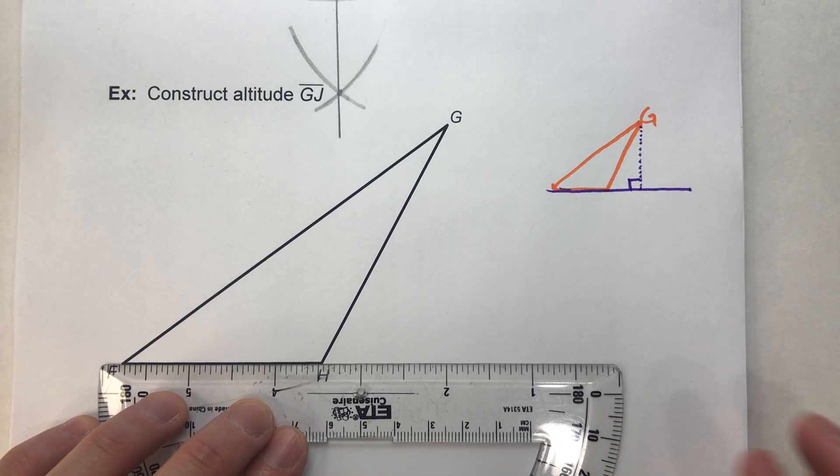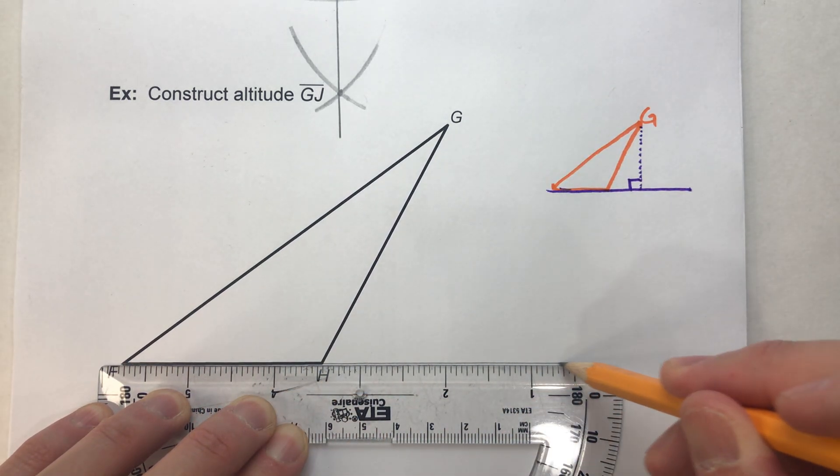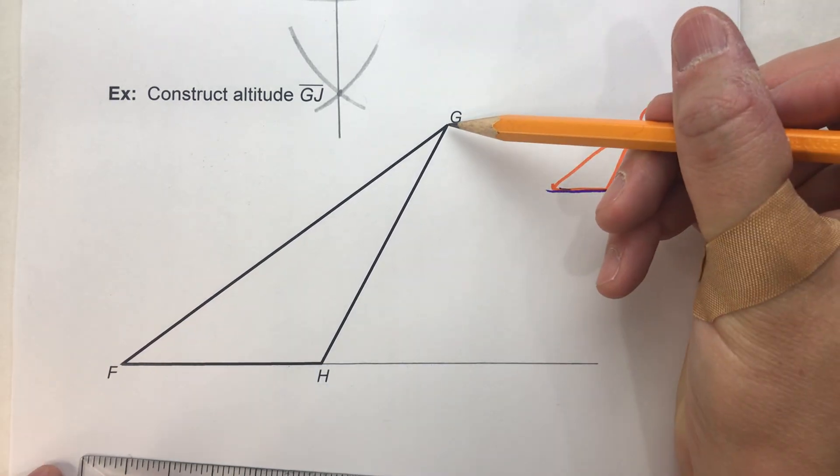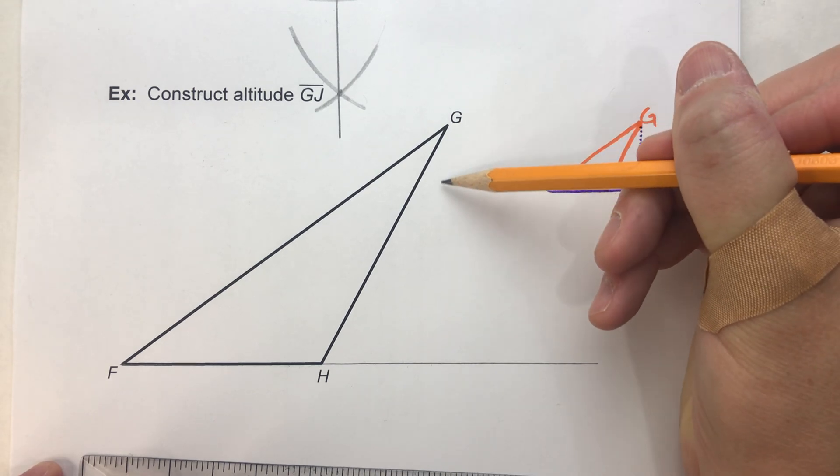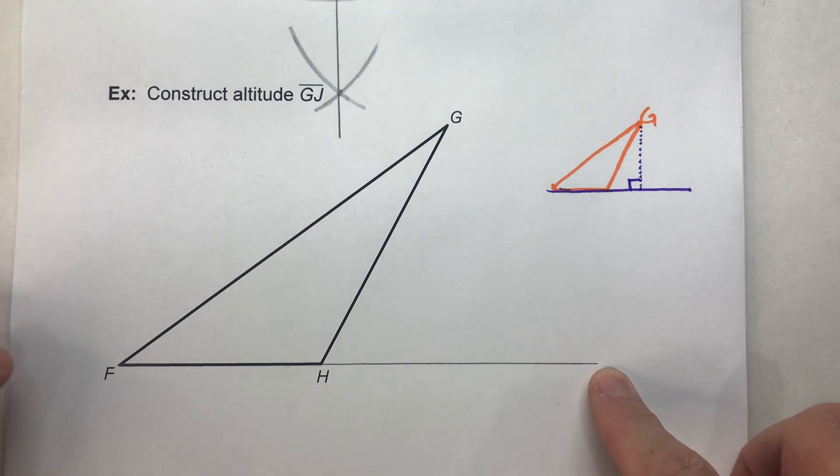So the first thing we're going to do, I'm going to extend this side because we're going to need this side to go further out. You can already kind of tell the altitude is going to be over here somewhere. But once we've extended it out,